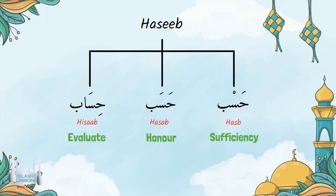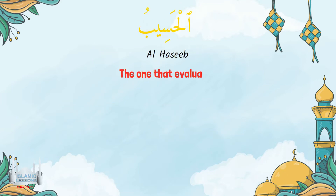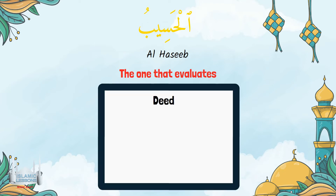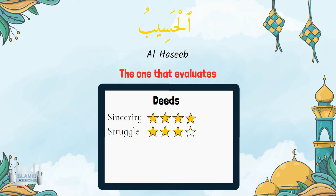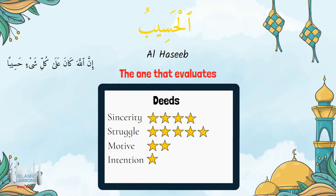Many have used these three words to describe the meaning of Allah al-Hasib, but the closest meaning will be the first one. Allah al-Hasib is the one that evaluates every deed. He evaluates how sincere was the deed, how much struggle a person went through, what was the motive and intention behind the deed. He takes into account every deed, even if a person had given away half a date.